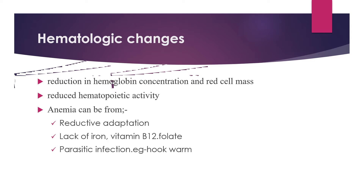Decreased oxygen requirement at the tissue level causes decreased need for oxygen, which causes decreased production of erythropoietin at the kidney, leading to decreased hemoglobin. The second cause is nutritional anemia from deficiency of vitamin B12, folate, and iron, which is also common during severe acute malnutrition.